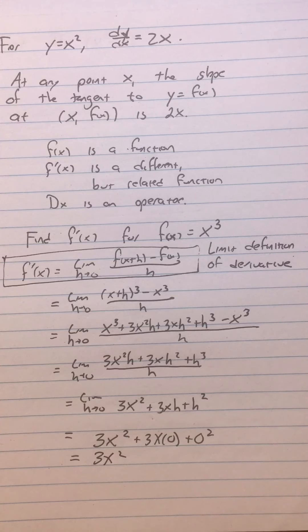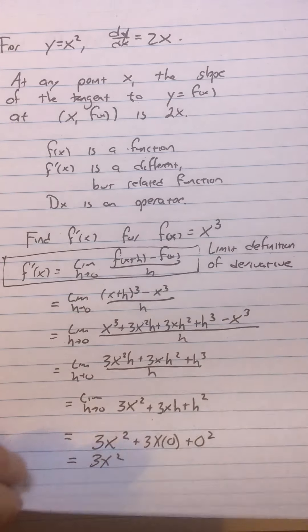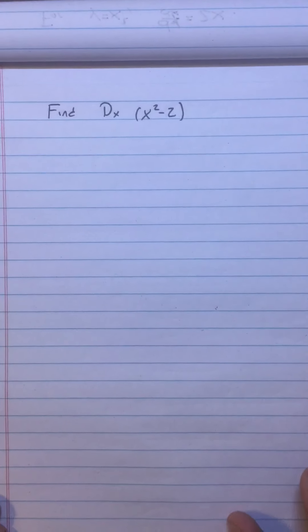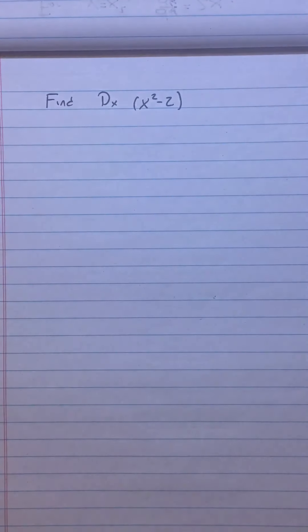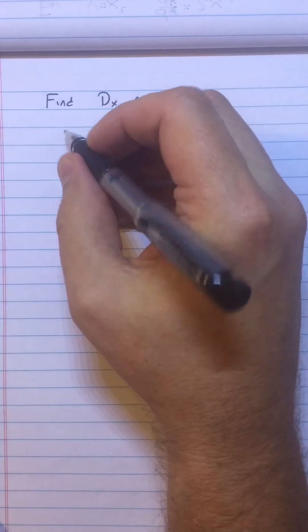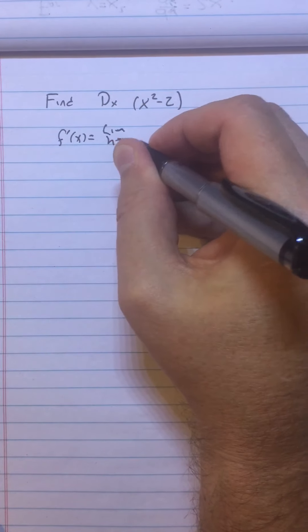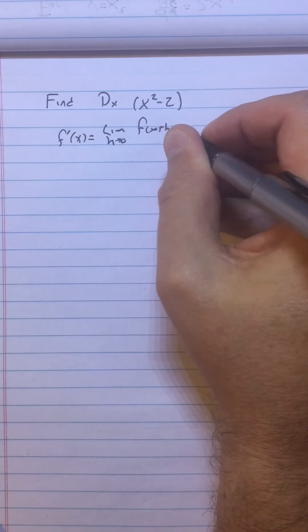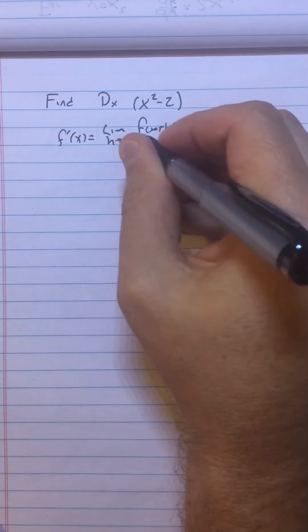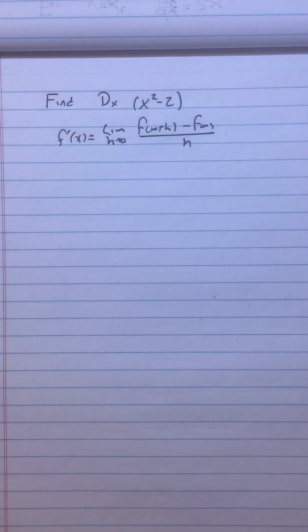And there you go. You have found the derivative of x cubed using the limit definition of the derivative. Now, the next one you definitely need to do on your own. Find the derivative of x squared minus 2. I wrote it differently, but it's the same thing. Just find that. Start with f prime of x equals limit as h approaches 0 of f of x plus h minus f of x over h. Start with that. Get your derivative. I guess I'll present the results in the next video.